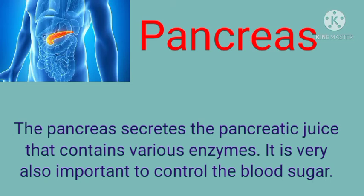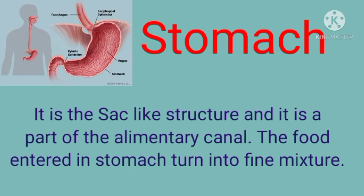The pancreas secretes pancreatic juice that contains various enzymes. This pancreatic juice is also important to control blood sugar. The stomach is a sac-like structure and is part of the alimentary canal. When food enters the stomach, it is turned into a fine mixture.